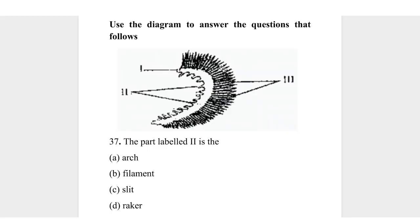Question 37. Use the diagram to answer the question that follows. We have seen this diagram in an earlier question, but it's the same diagram with a different question. The path labeled II is what? Part I is the gill arc, part II is the gill raker, and part III is the gill filament. So II is the gill raker. The correct answer is D, gill raker.